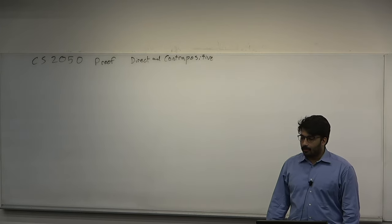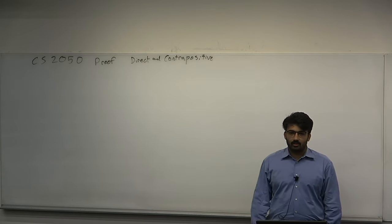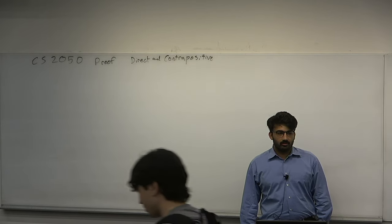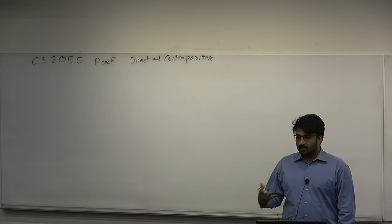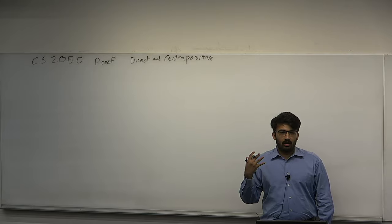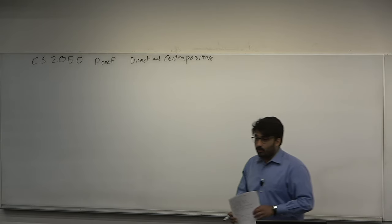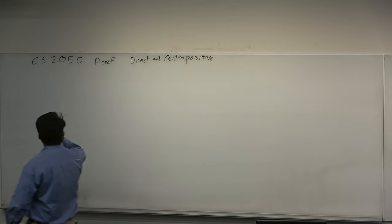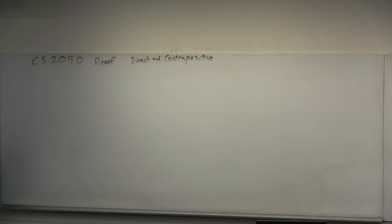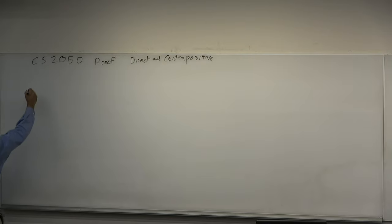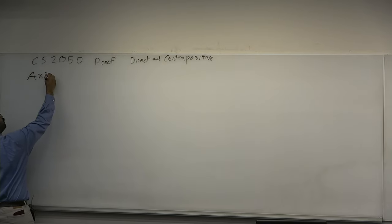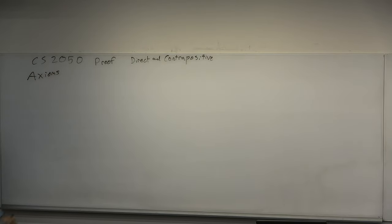It has been known since very ancient times that truth can only be derived from other assumed truths. If you have no assumed truths, you can't deduce anything. Everyone realized at the beginning that you need to start with some assumptions taken to be true, which you cannot prove. These are called axioms. An axiom is a truth which cannot be proved — it's simply assumed to be true, and these are often so obvious they don't need a proof.